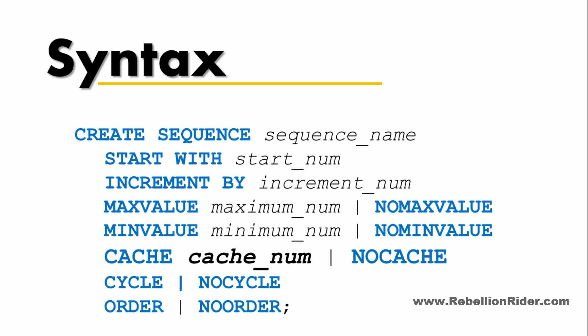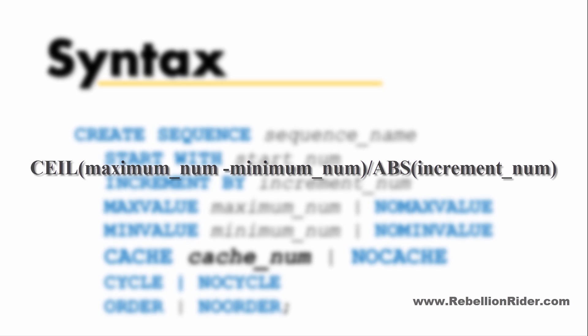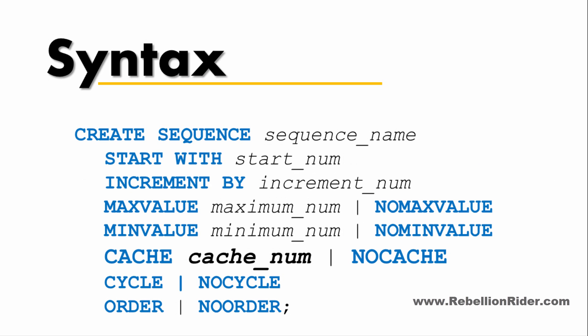Then we have the CACHE or NO CACHE attribute. As a value of the CACHE attribute you specify the number of integers to keep in memory. The default number of integers to cache is 20, and the minimum number of integers that may be cached is 2. The maximum integers that may be cached is determined by a formula. Specify NO CACHE to indicate that values of the sequence are not pre-allocated. If you omit both CACHE and NO CACHE, the database caches 20 sequence numbers by default.